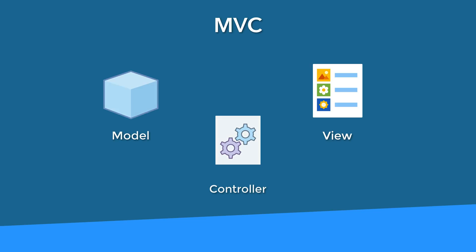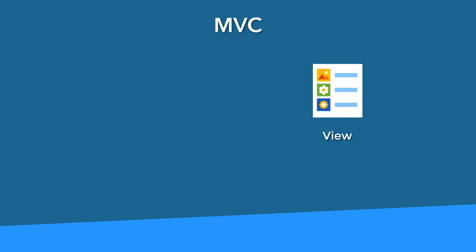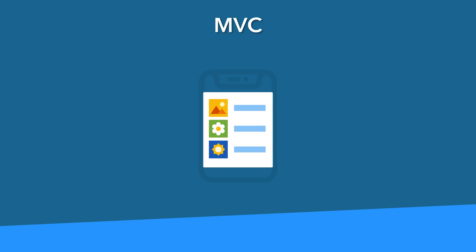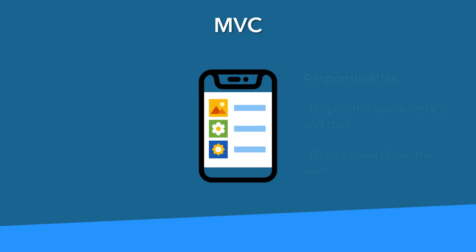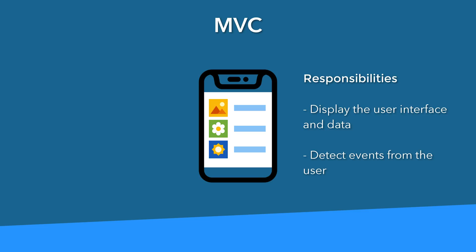The view is the easiest to explain first. This is what the user sees when they look at your app. The responsibility of the view is to display the user interface and detect events from the user such as taps and swipes. Aside from the UI elements such as buttons, labels, and scrollable lists, usually some sort of data or information is displayed on the screen.